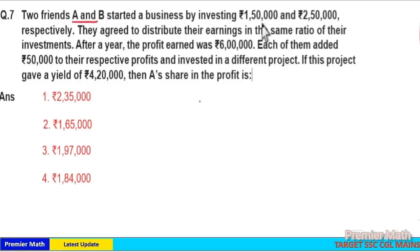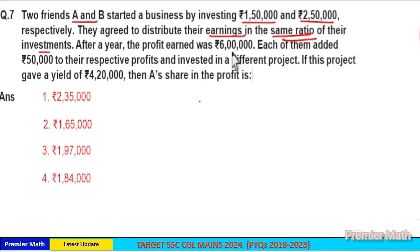Two friends A and B started a business by investing ₹150,000 and ₹250,000 respectively. They agreed to distribute their earnings in the same ratio of their investment. After a year, profit earned was ₹600,000. Each of them added ₹50,000 to their respective profit and invested in a different project. If this project gave a yield of ₹420,000, then A's share in the profit is.